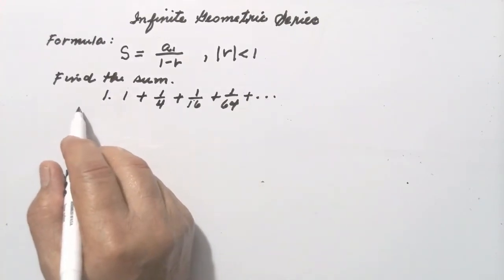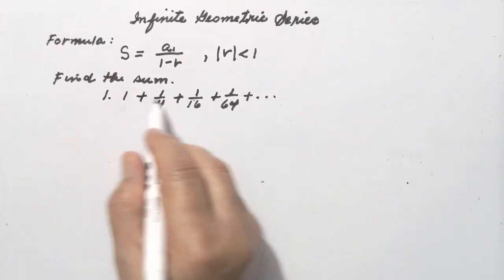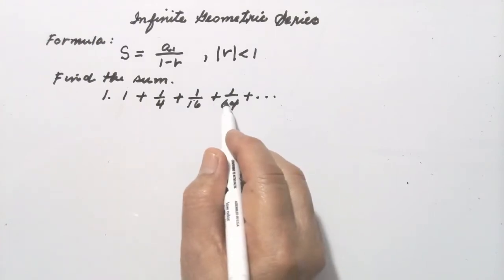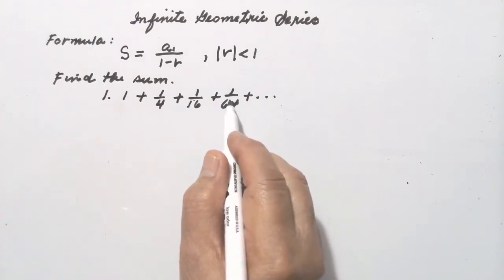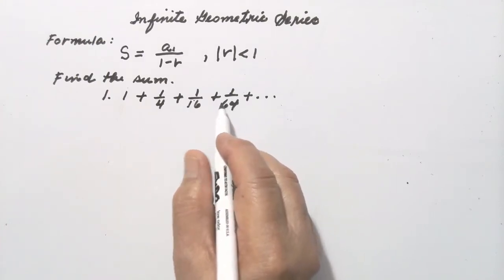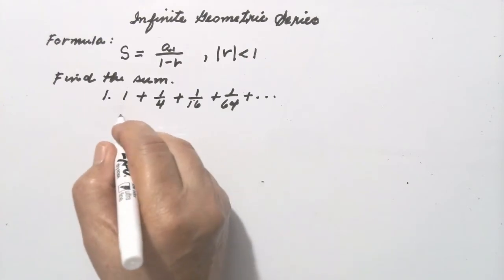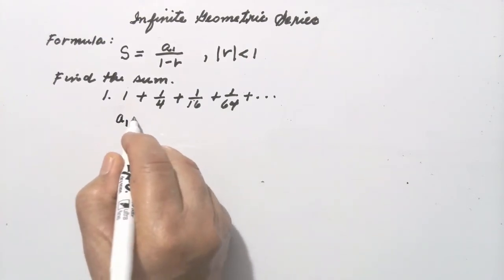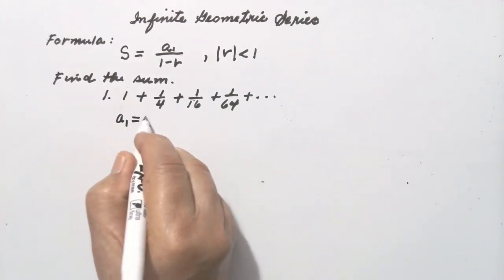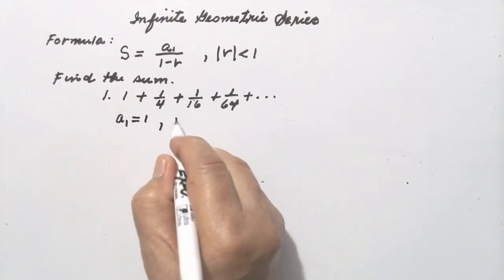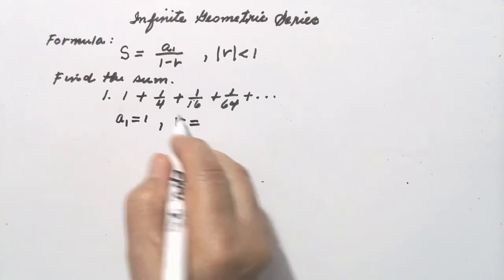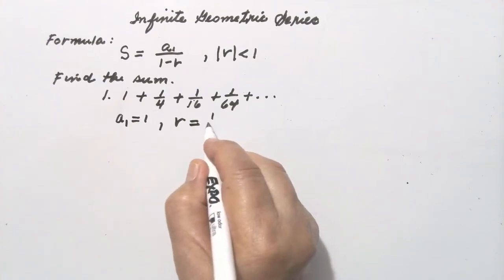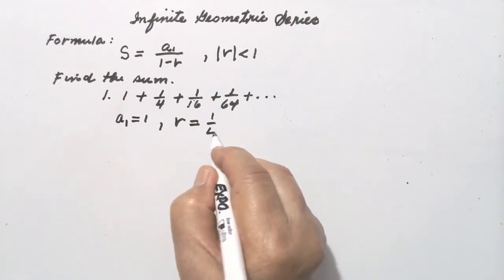Let's do this. Find the sum. Notice that we are asked to solve for the sum, not just the partial sum. A sub 1 here is 1, and the common ratio r is 1/4 divided by 1, which is 1/4.